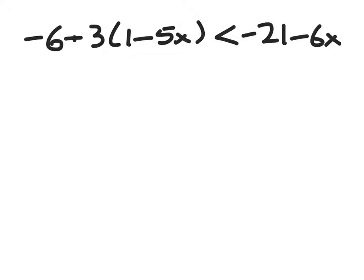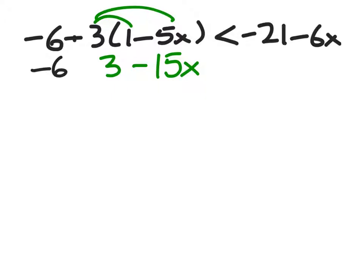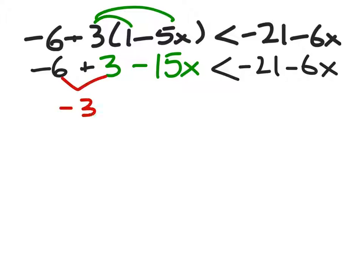Now distributing the 3: 3 times 1 is 3, minus 3 times 5x is 15x. We still have the negative 6, added to 3. That is less than negative 21 minus 6x. Combining like terms: negative 6 plus 3 is negative 3, minus 15x less than negative 21 minus 6x.